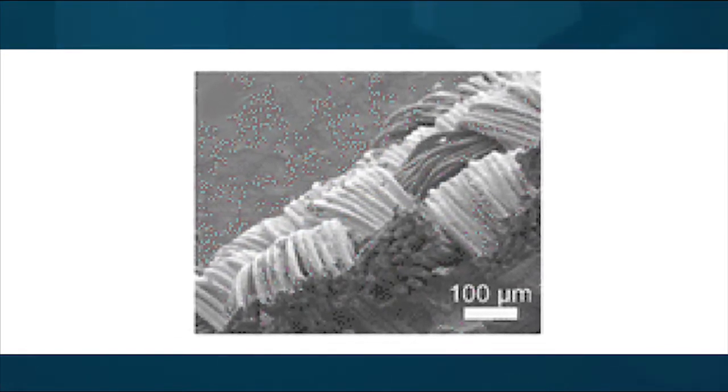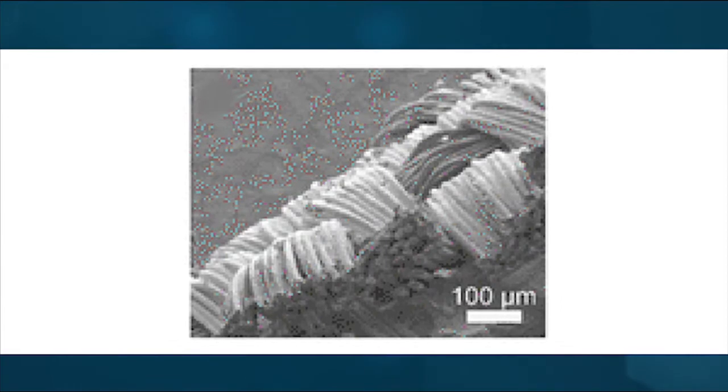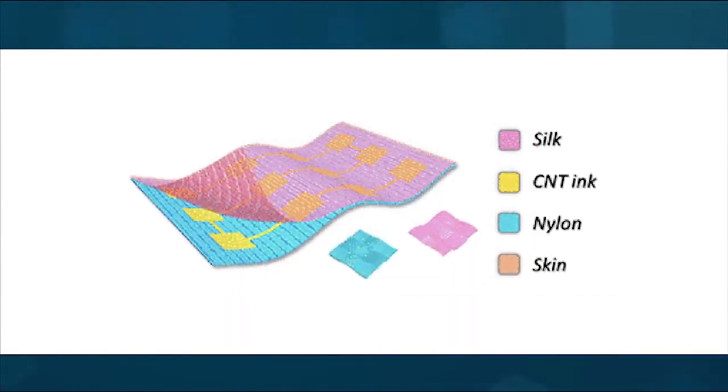To make the e-textile washable, they incorporated polyurethane into the carbon nanotube ink, which made the nanotubes stick firmly to the fabric.